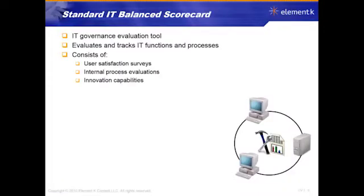One thing that a lot of companies do, especially larger ones, is use something called an IT balanced scorecard. The scorecard is really an IT governance evaluation tool. It allows you to track IT functions and processes and see the results of what we're doing — how well are we doing? So we can see, is anything red right now? Is anything yellow? How much is green? It can involve internal data gathering and satisfaction surveys.